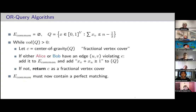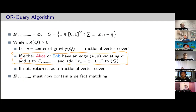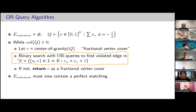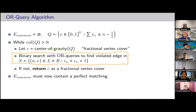This algorithm generalizes easily to other query models. For the OR query model, the only thing we change is the separation oracle implementation. Instead of Alice and Bob finding a violating edge, you define a set S of all pairs U and V that would not be covered if they were an edge. Then use OR queries and binary search over S to find a violating edge if one exists. That gives log n OR queries to implement one separation oracle step. For the randomized XOR query and quantum edge query algorithms, you do something similar — just massage the separation oracle step for the specific query model.